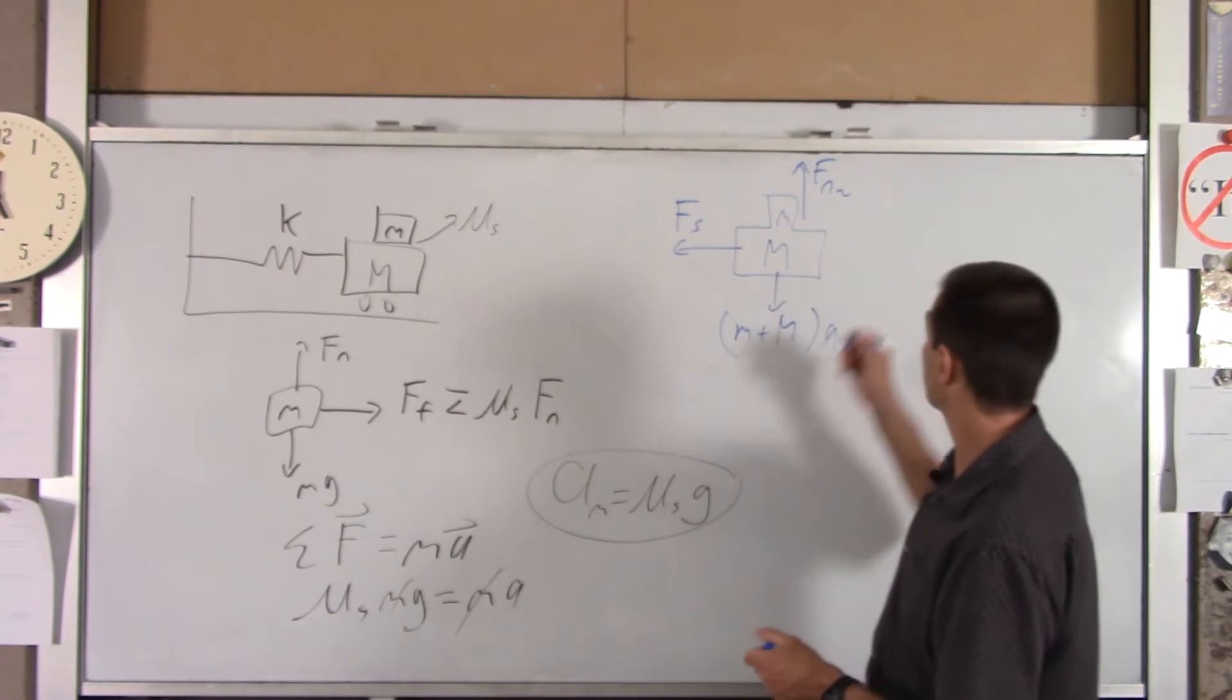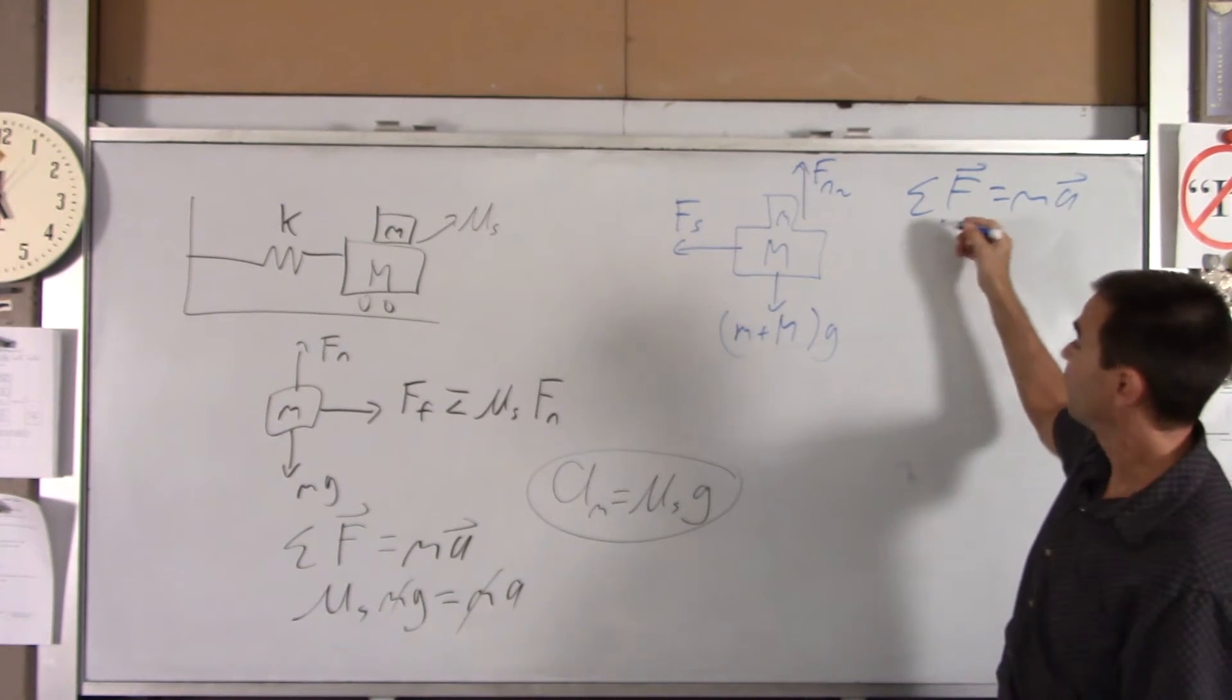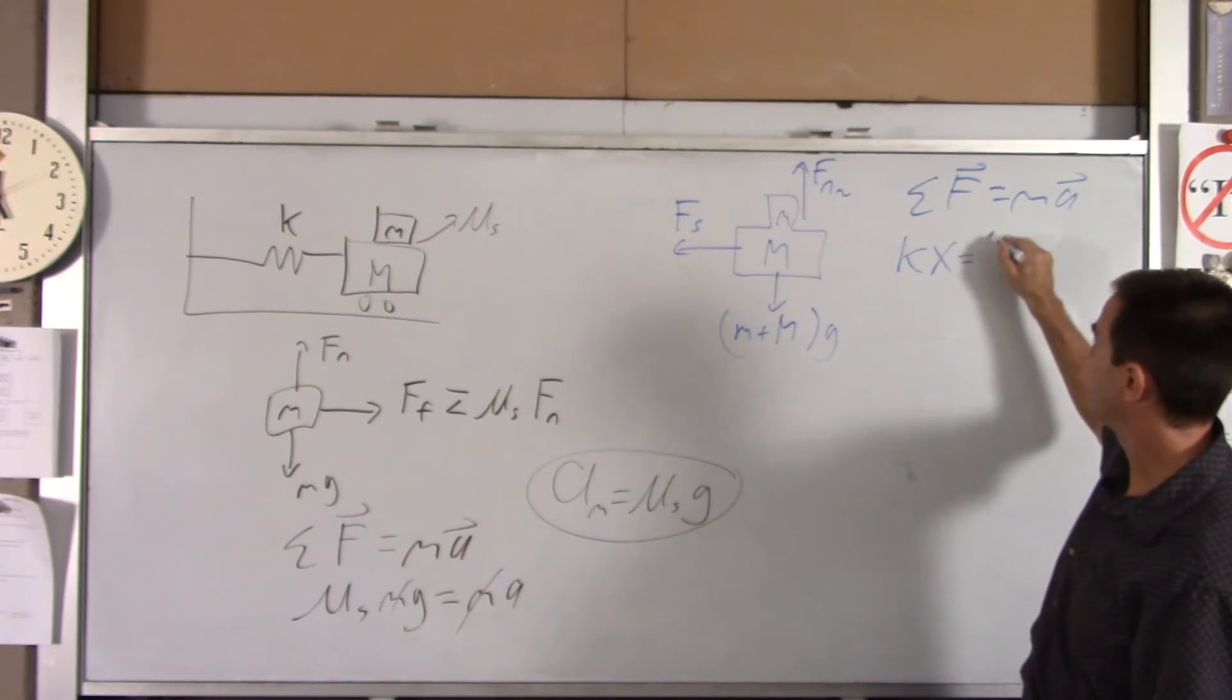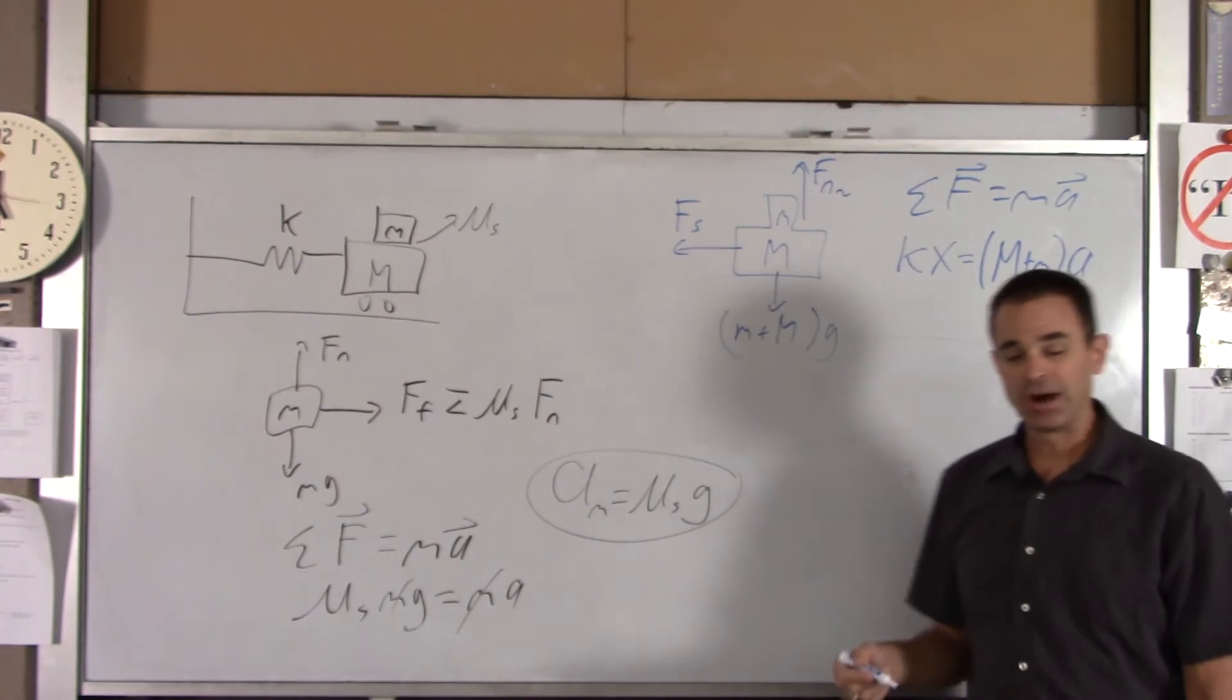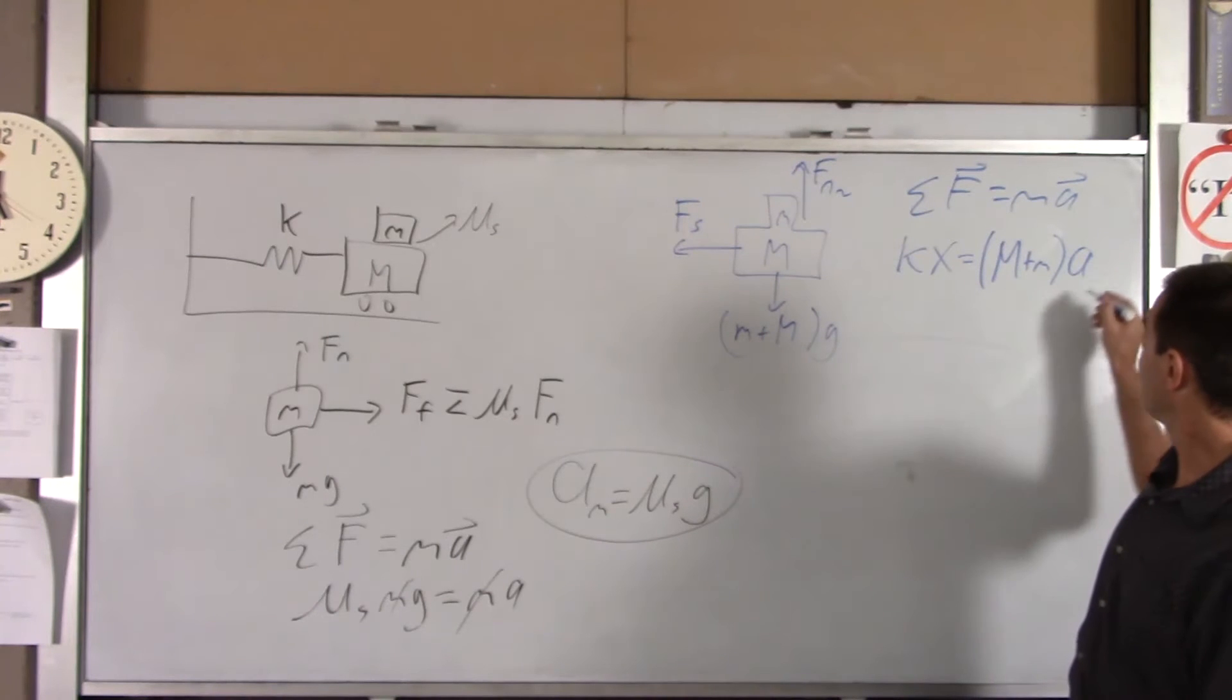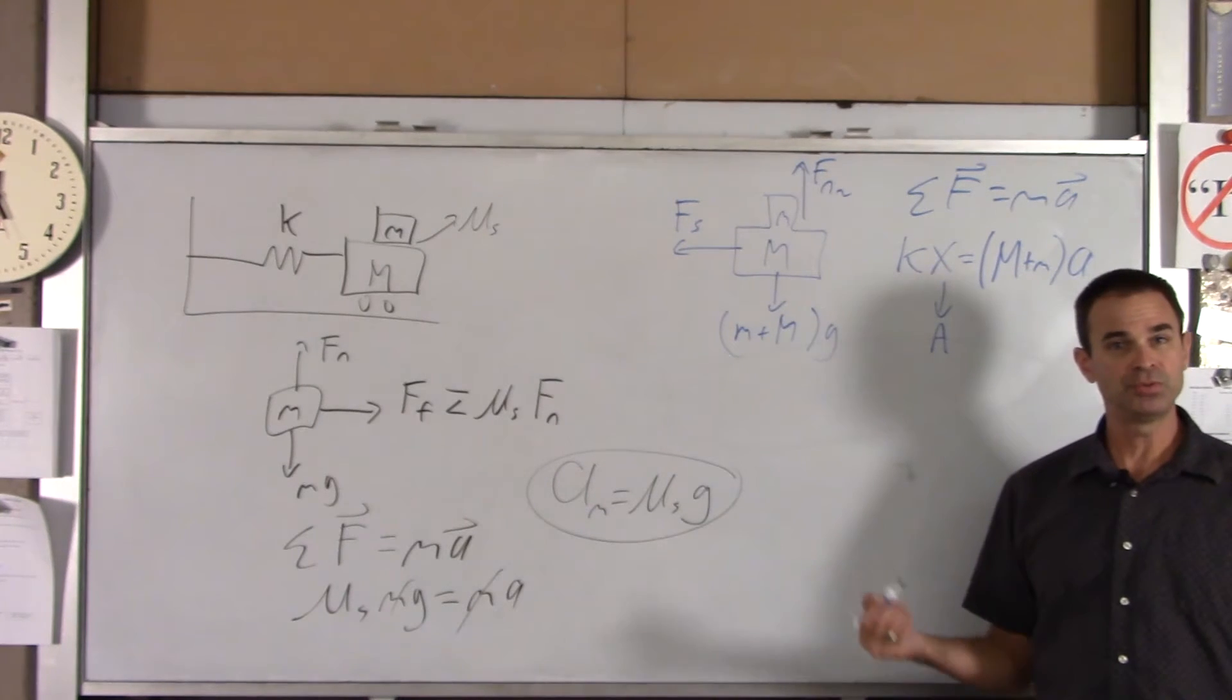So, I'm going to write that force equals ma for this system. The only force is kx, and that equals m. Now, in this case, we got big M plus little m, and then times a. Now, I want the max acceleration. So, I'll put a max there, and that will give me my max value of x, which is the amplitude of the motion, which is a.